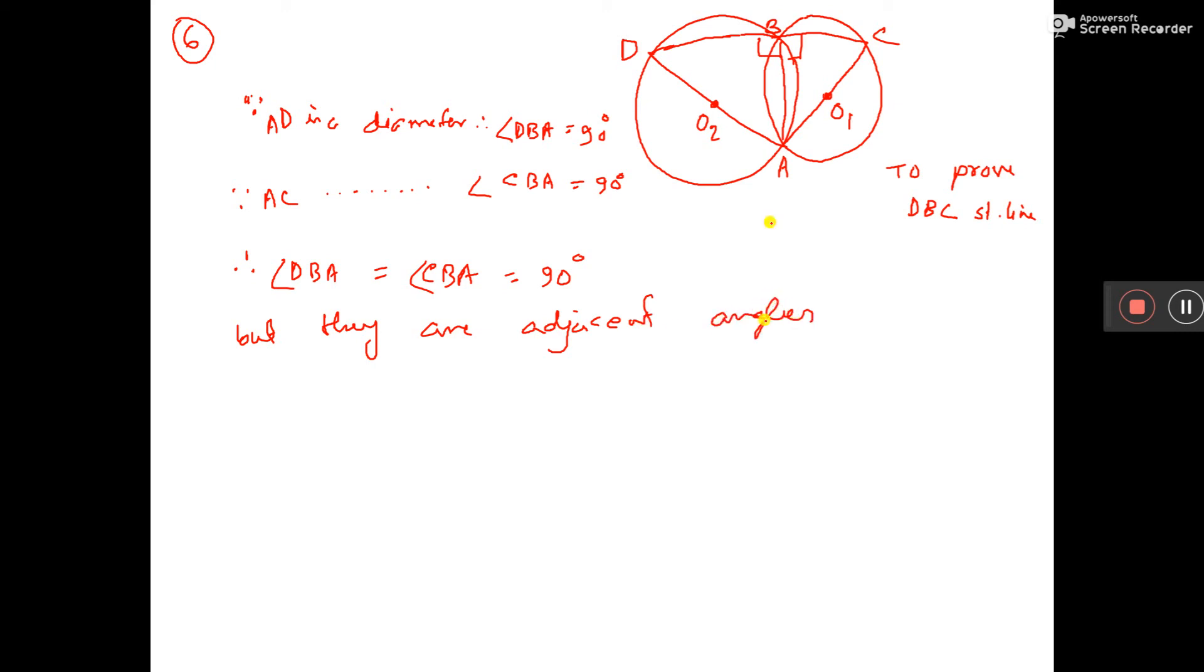Now, if adjacent angles are 90 degrees, therefore DBC lies on a straight line. So our sum is proved.